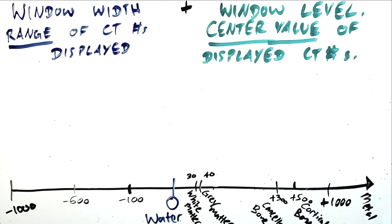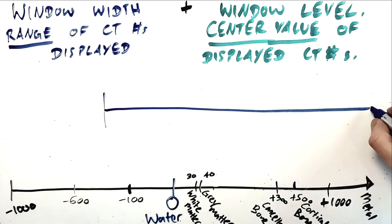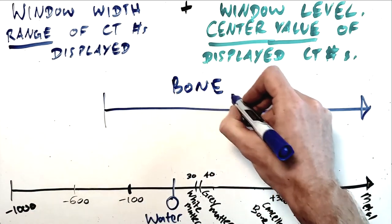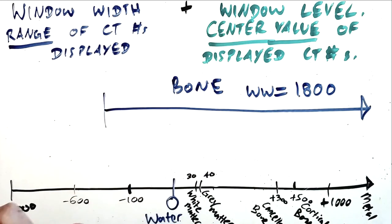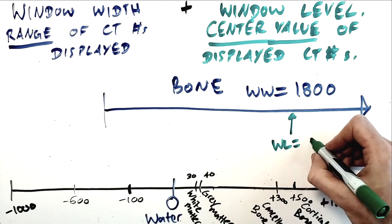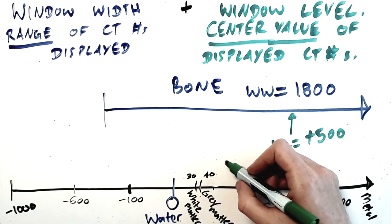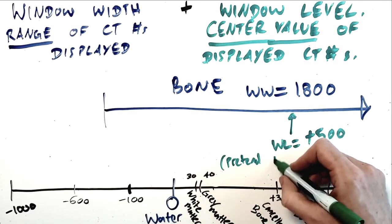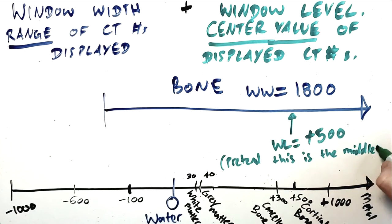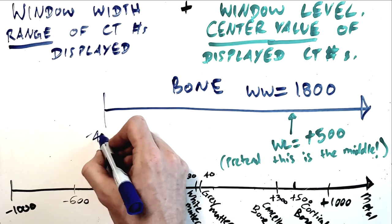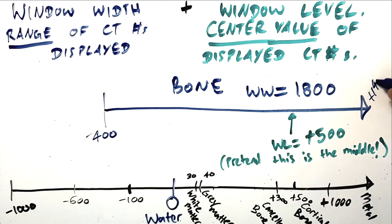And for a final example, a wide window used for bone would be that window width of 1800 and a window level of plus 500. So this means we're displaying values between minus 400 and plus 1400 as some shade of gray, and excluding any values below or above that range as black or white respectively. This centers our grayscale at a high number because we're looking at high density structures, and it spreads our grayscale out over a wide range because of the large difference between the density of trabecular and cortical bone.